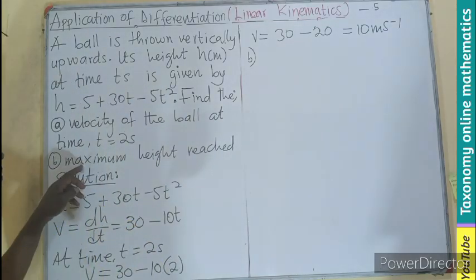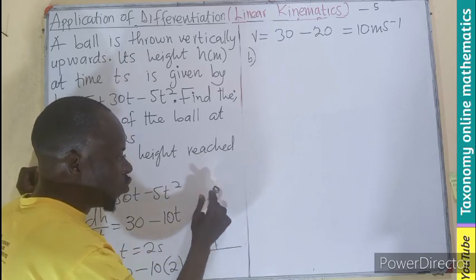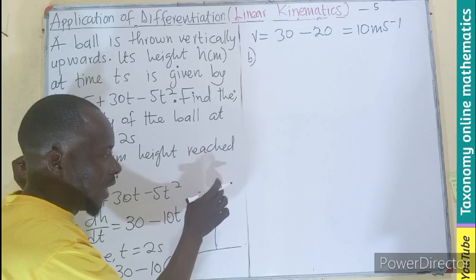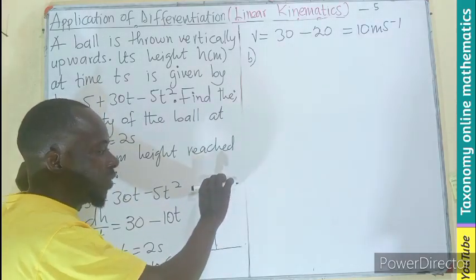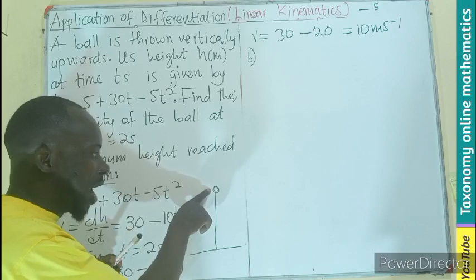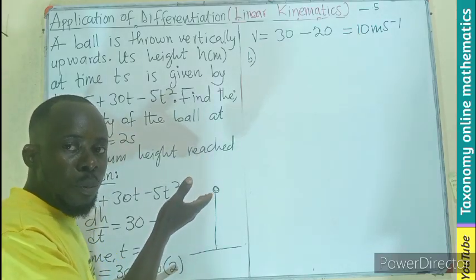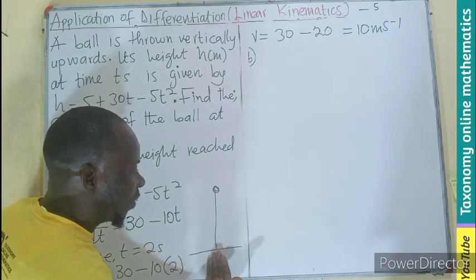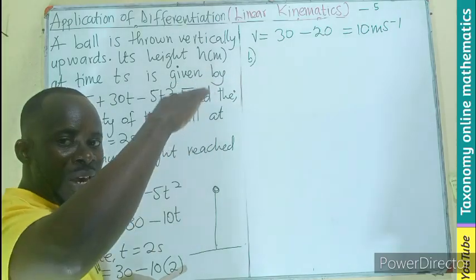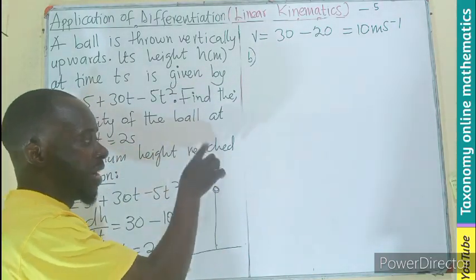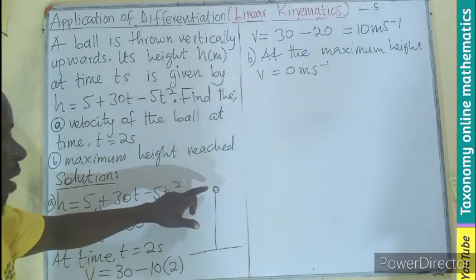Now for part B, maximum height. When you throw a ball upward, when the ball gets to its maximum height it will not stay there — it will definitely come down. So at the point it stops before coming down, the velocity will become zero. This is the maximum height it will reach before it begins to fall. At that moment, nothing is propelling it anymore, so the velocity becomes zero, and then it begins to drop in a negative direction. So at maximum height, the velocity is zero.